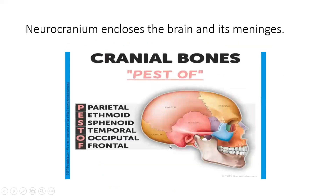The skull is divided into two major parts: the neurocranium and the viscerocranium. The neurocranium is the upper part of the skull. Using the mnemonic PESTOF, the bones of the neurocranium are: Parietal, Ethmoid, Sphenoid, Temporal, Occipital, and Frontal. The frontal bone is the bone of your forehead — it's located frontally at the front of the head.